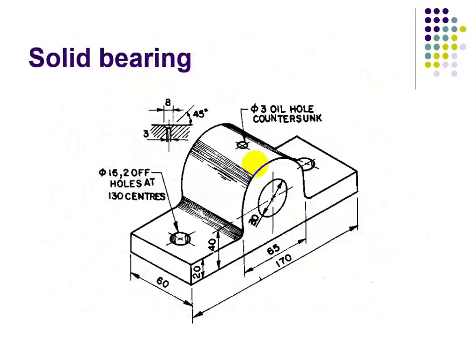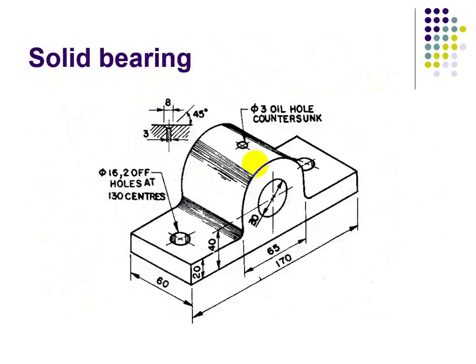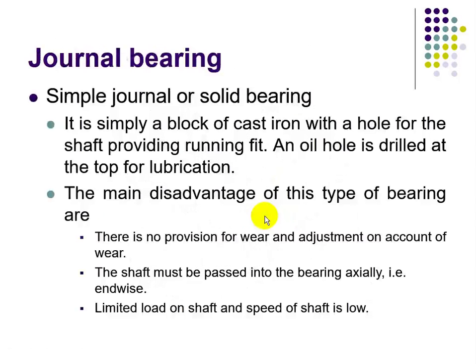The figure shows a simple solid journal bearing. It is simply a block of cast iron with a hole for the shaft providing a running fit. An oil hole is drilled at the top for lubrication. You can see the hole where the shaft is inserted to provide support while rotating. The main disadvantages of this type of bearing are: there is no provision for wear adjustment, and the shaft must be passed axially into the bearing.